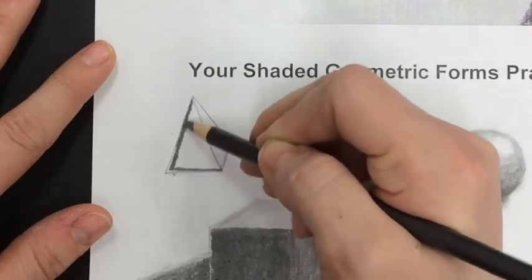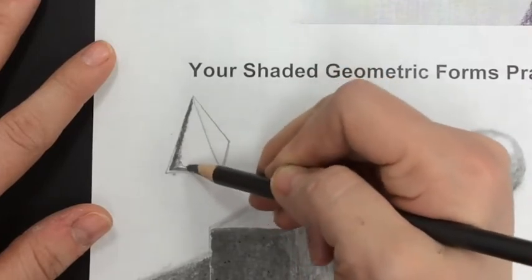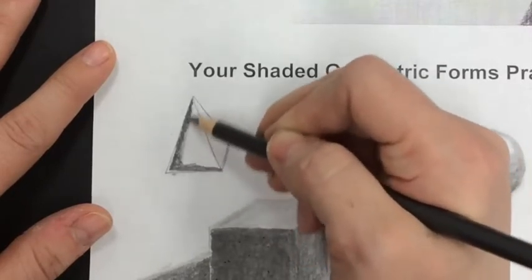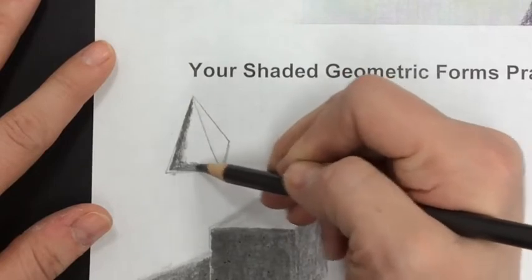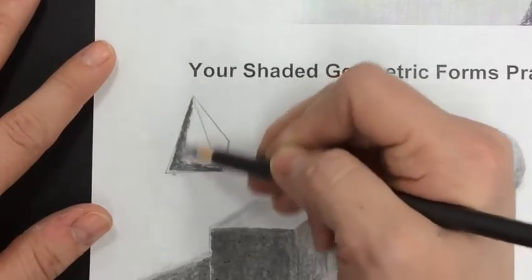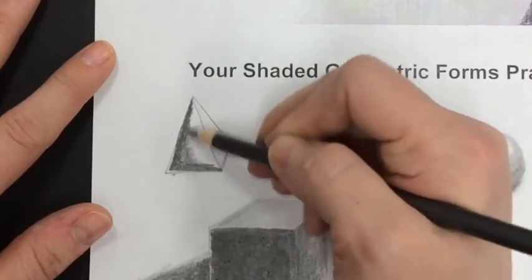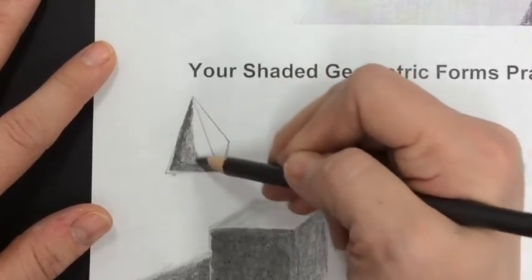Going right up next to that reflection. Now remember, follow the shape of your object. So follow the contour, keeping it darkest in this L-shaped angle, then starting to lighten my pressure.